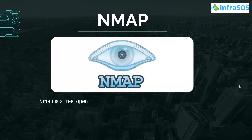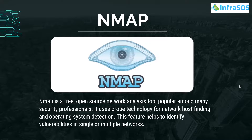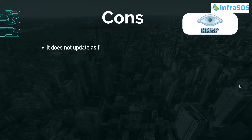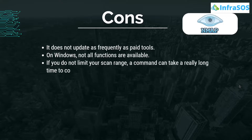At number fourteen we have Nmap. Nmap is a free open-source network analysis tool popular among many security professionals. It uses probe technology for network host finding and operating system detection, helping to identify vulnerabilities in single or multiple networks. Pros include the ability for scanning methods to avoid IDS, GUI functionality through Zenmap, and comprehensive port scanning of both TCP and UDP ports. Cons include that it does not update as frequently as paid tools, not all functions are available on Windows, and without limiting scan range a command can take a very long time to complete.